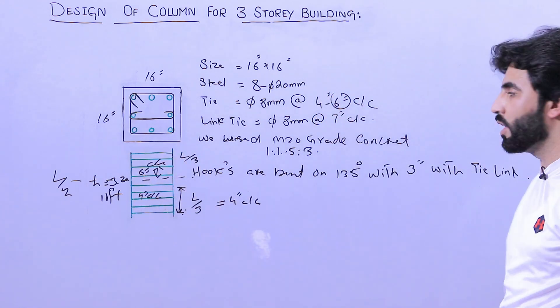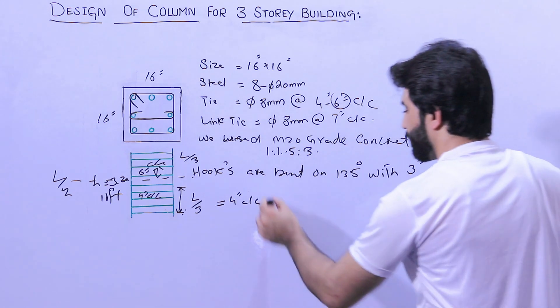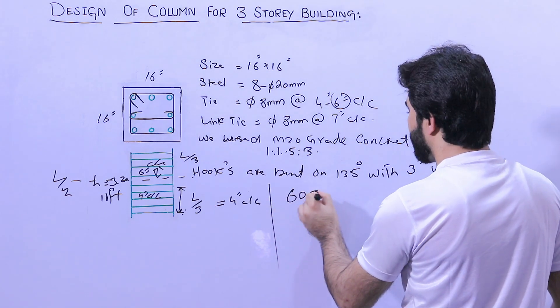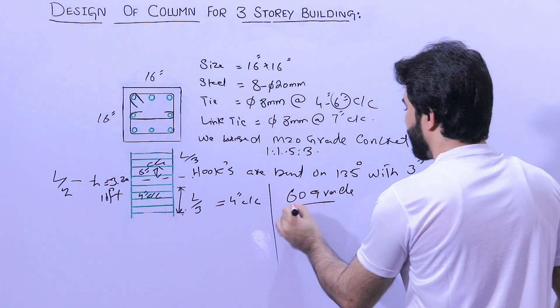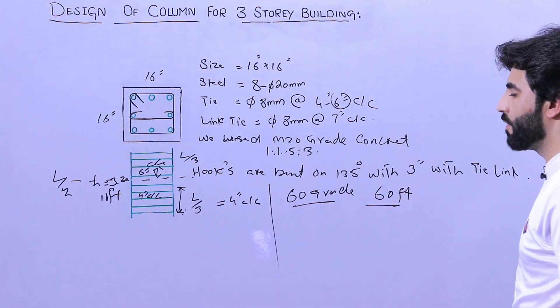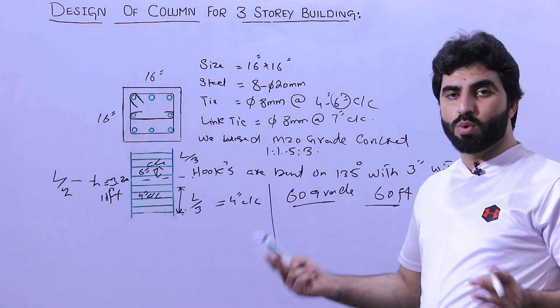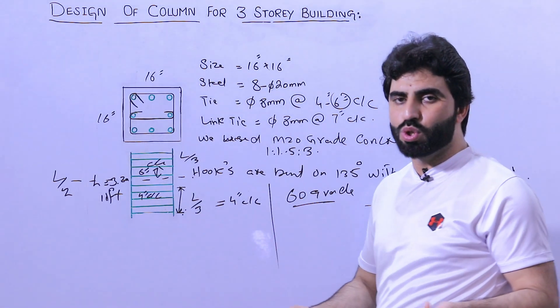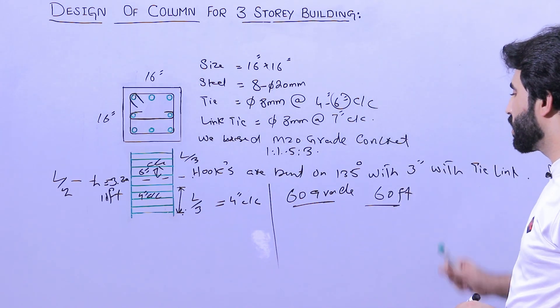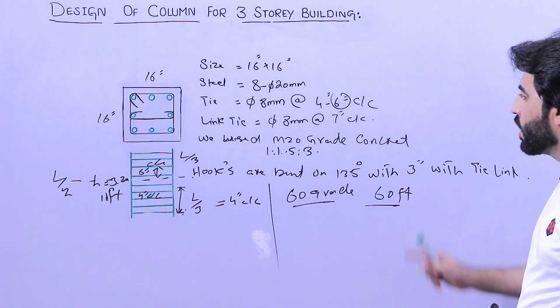So this is details for the ties. Next, here we used 60 grade steel rod where the length is 60 feet for each steel reinforcement. So don't use 40 grade steel rods if you are going more than two storey or double story. If that is three storey or four storey, so don't use less than 60 grade.